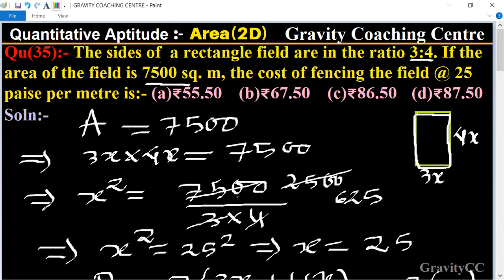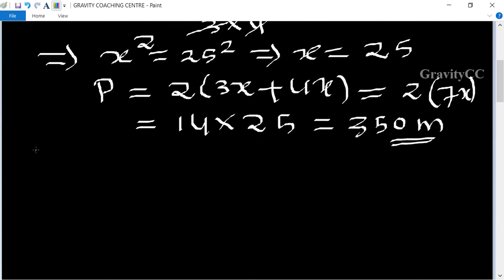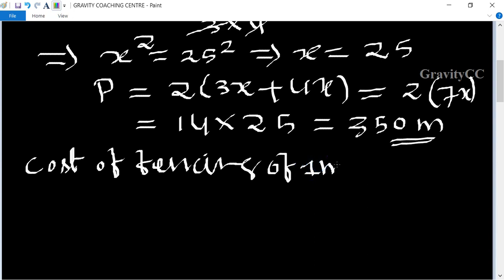The cost of fencing at the rate of 0.25 per meter. Therefore, the cost of fencing 1 meter is 0.25 rupees.